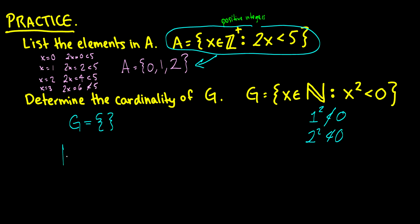So we can say that the cardinality of G is equal to 0. Now, because G is the empty set, that means the cardinality is 0. That does not mean that the cardinality is the empty set.